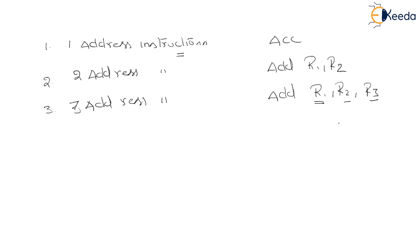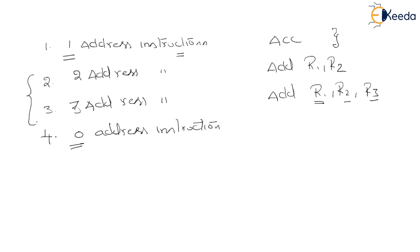In the three address instruction, the first operand is the destination and the remaining two are the source operands. There is another instruction format also available — that is the zero address instruction. We will discuss zero address instructions later. The one address instructions can be found in single accumulator organization. The two address and three address instructions can be found in general register organization. The zero address instructions are available in stack organization. General register organization supports two address or three address instructions — sometimes an instruction can have two operands, sometimes three operands directly. When it comes to stack organization, it doesn't support any operand within an instruction. We will understand stack organization and its instructions in an upcoming session.